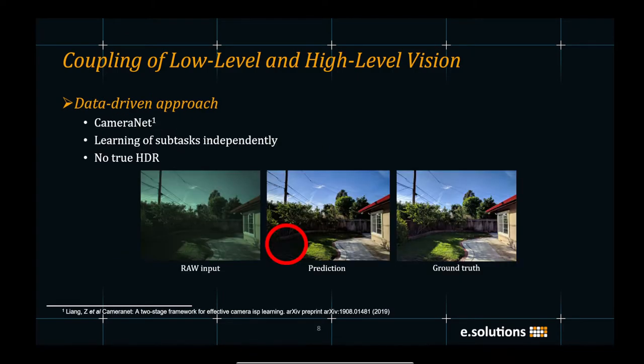Recently, data-driven methods have shown good results by learning decoupling from an example data. CameraNet learns the restoration and enhancement subtasks independently from an example data set. However, even such a method cannot produce a true HDR image as shown in the prediction.